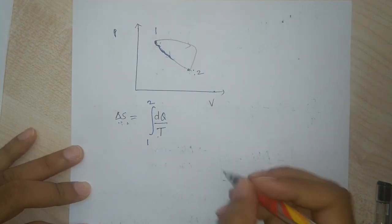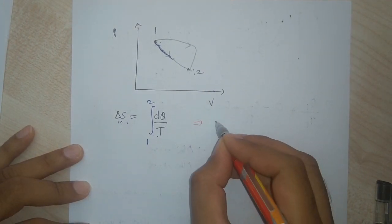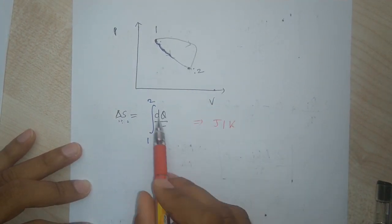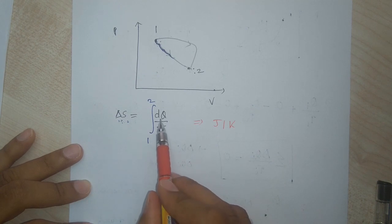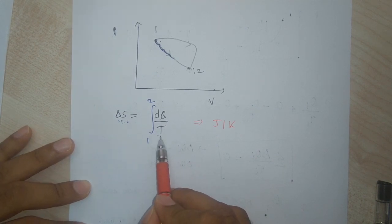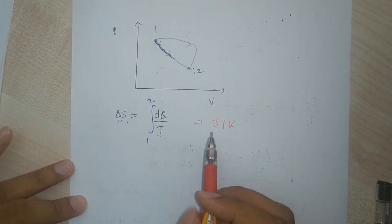The units of entropy are joules per kelvin, as seen from the definition: heat is in joules and temperature is in kelvin.